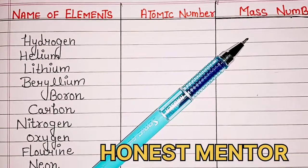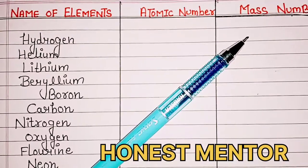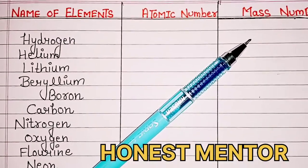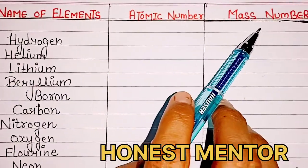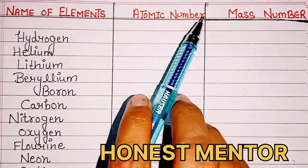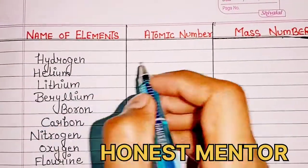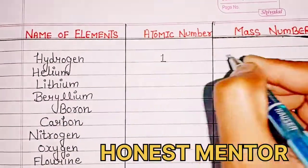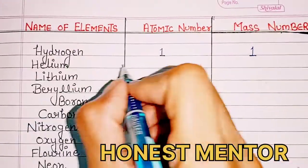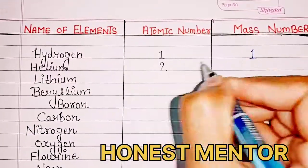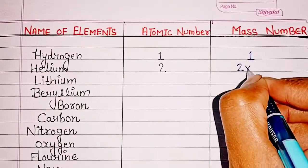Hello everyone, welcome to my channel. In today's video we are going to see the name of elements, atomic number, and mass number. Let's start. Hydrogen: atomic number 1, mass number 1. Helium: atomic number 2, mass number 2.